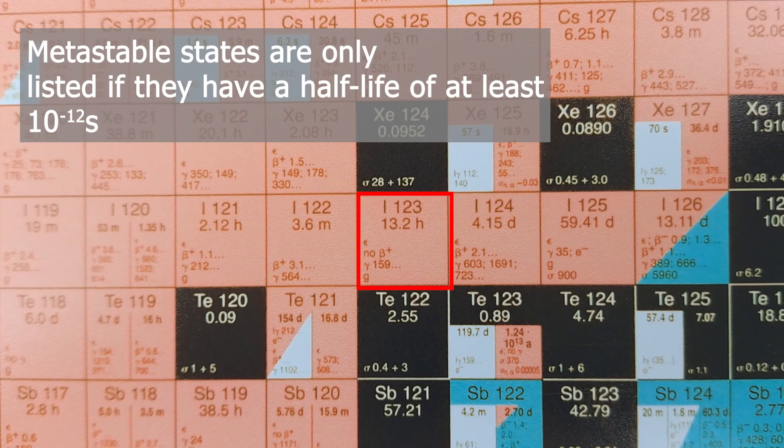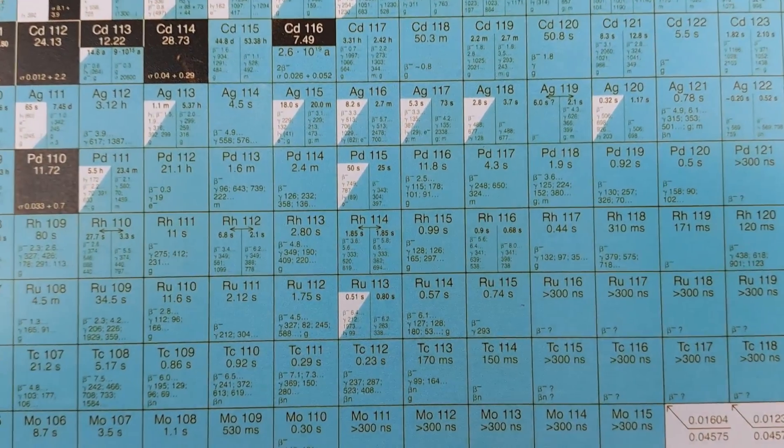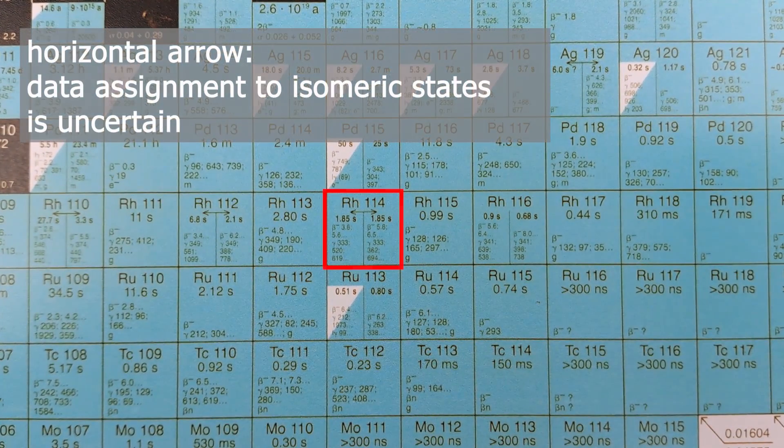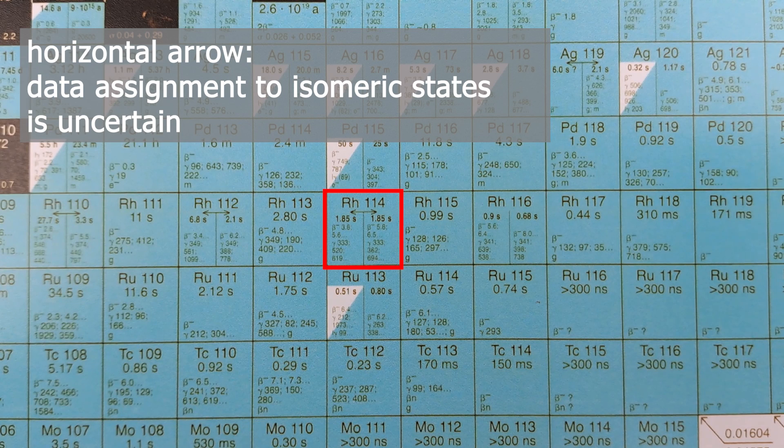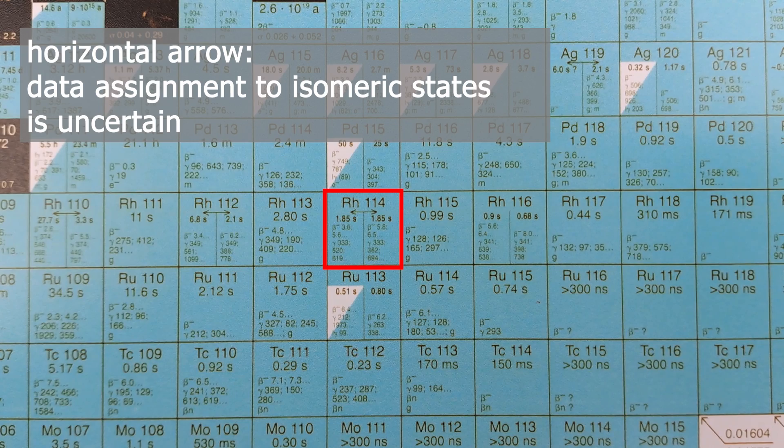Only when both criteria are met, then the label M can be used. The next question is about the horizontal arrows. This indicates uncertainty when it comes to assigning decay data to different isomeric states. For example, here Rhodium-114.